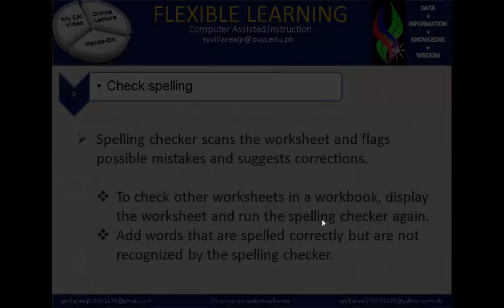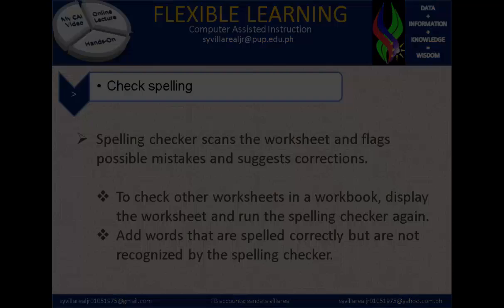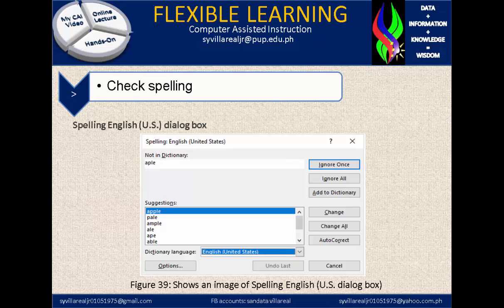Let's proceed to our last topic: check spelling. The spelling checker scans the worksheet and flags possible mistakes and suggests corrections. To check other worksheets in a workbook, display the worksheet and run the spelling checker again. Add words that are spelled correctly but are not recognized by the spelling checker. In figure 39, shows an image of the Spelling English U.S. dialogue box. You will notice there's a dictionary, and if you type something that is not in the dictionary, it will give you a suggestion below.